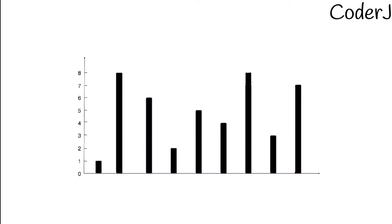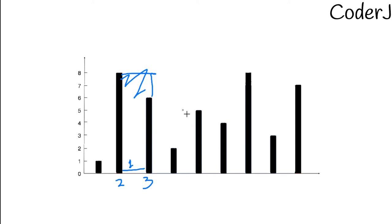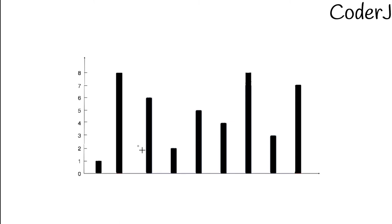How do you find the amount of water that two rods store between them? Suppose I take rod two and rod three — the gap between them is one unit. If the water level were higher, it would overflow. So you can only store water up to the height of the shorter rod. The formula is: gap between two rods multiplied by the minimum height of the two rods.